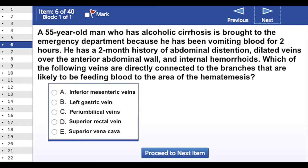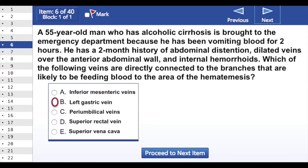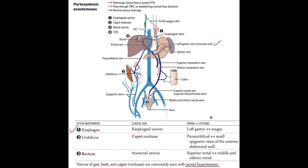You should be thinking of the left gastric veins. The signs and symptoms this man is presenting with are classic of a cirrhotic liver with portal hypertension and esophageal varices. It's the left gastric veins that will drain the esophagus on the abdominal side, and it's the esophageal veins that will drain the esophagus back to the azygos system on the thoracic side.